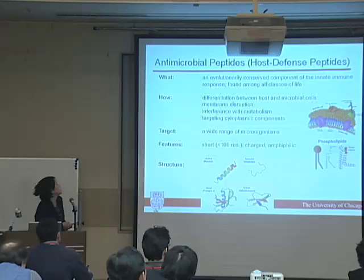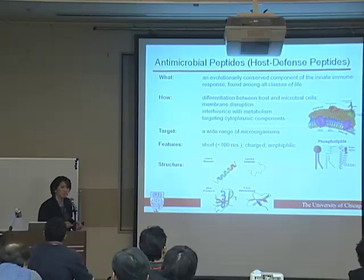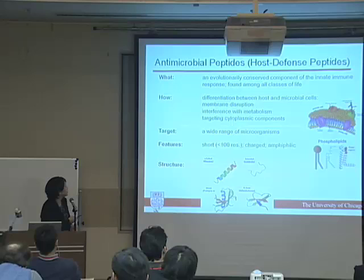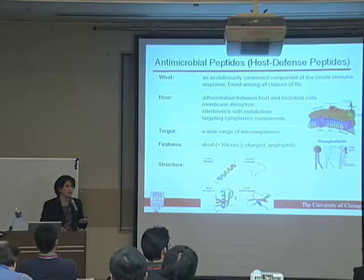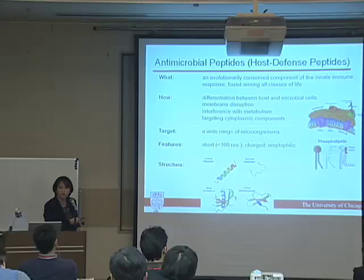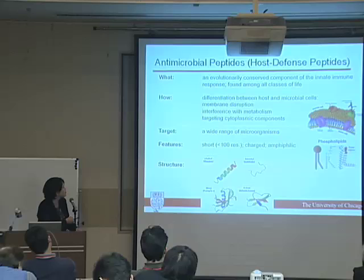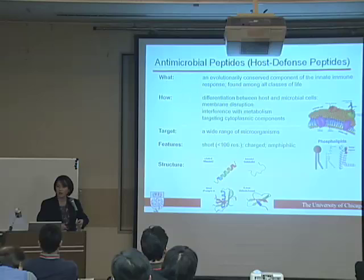The antimicrobial peptide can also interfere in the metabolism of these microbes and hence kill it, or it could actually be imported into the microbes and actually target the cytoplasmic component of the system. So unlike antibiotics which we take when we have a bacterial infection, these class of peptide — and over 1,200 of them have been identified as antimicrobial in nature — actually has a wide range of targets, ranging from gram-positive, gram-negative bacteria to viruses, and so on and so forth.